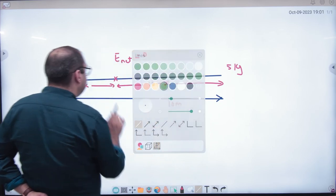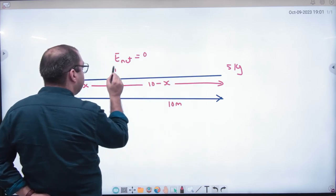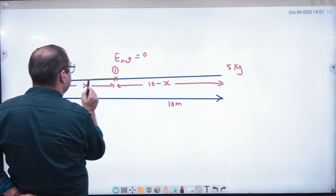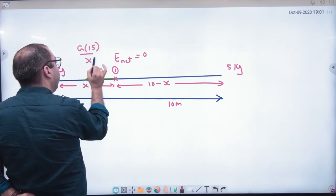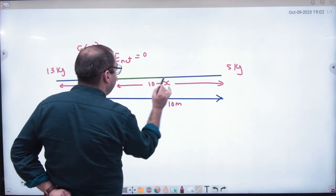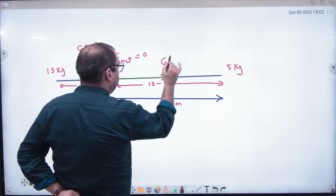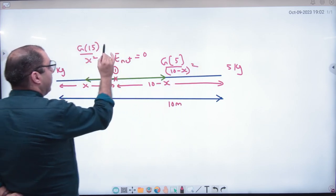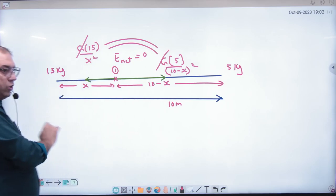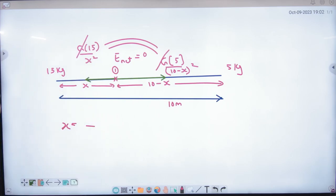Now what will we have to do? First 15 kg will attract this one towards itself. E value will be G into 15 divided by x square. Similarly this 5 kg will attract one. E will be G into 5 divided by 10 minus x whole square. To make net e zero, both of these will have to be equated. Equate them, solve them, whose value will come? X's value. Exactly like force, same way E was done. The point is being understood. I'm showing by doing it so you understand that there's not much difference between force and E. In both types of numericals, vector concept has to be applied.